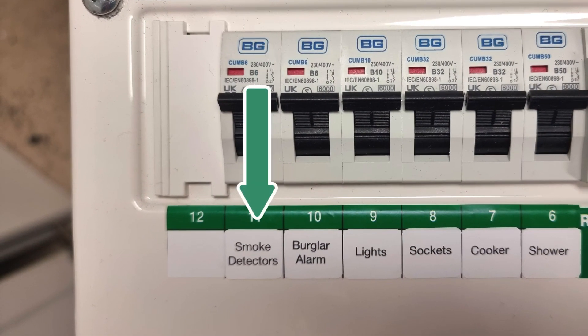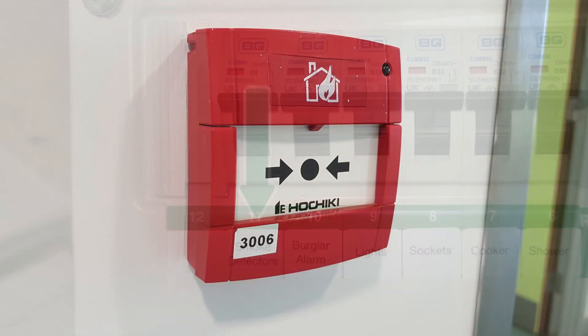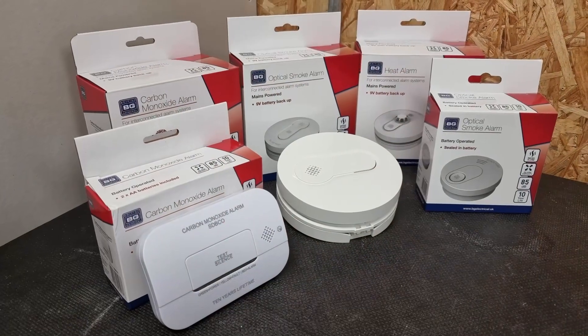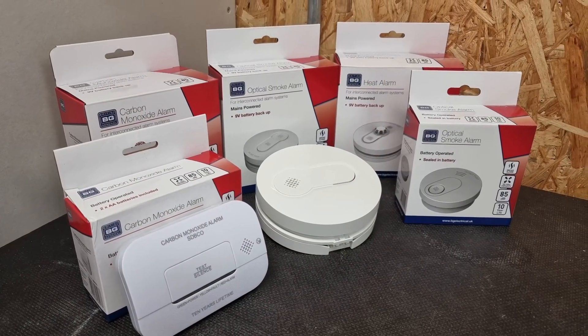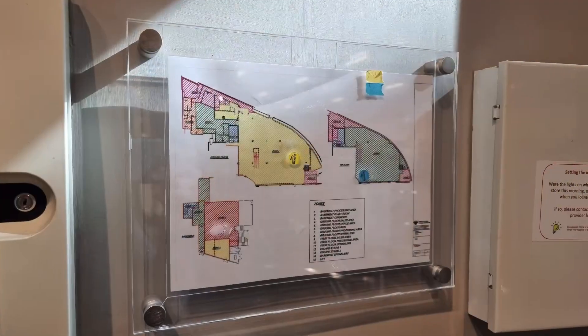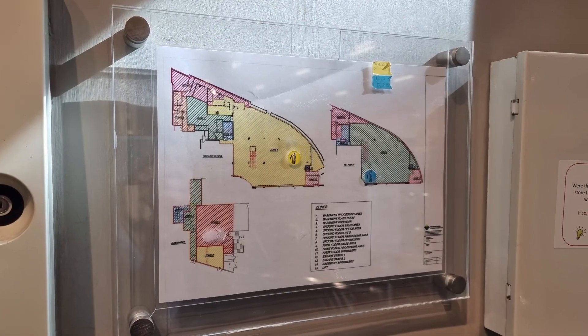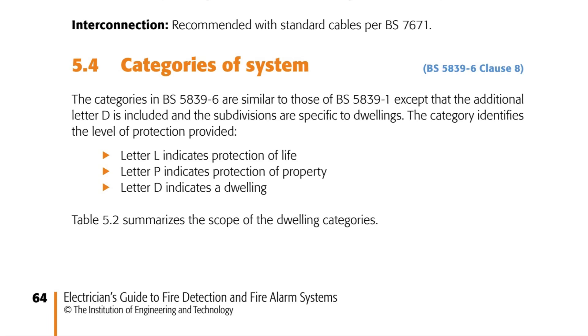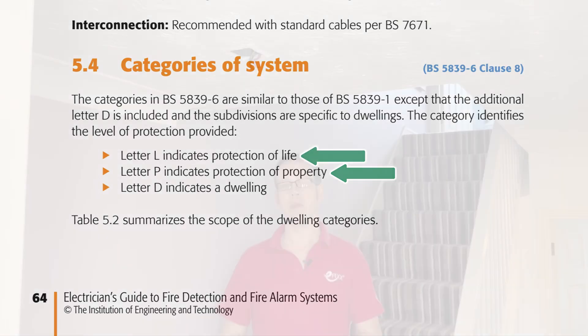Some fire detection systems would simply be overkill for domestic situations, and detection equipment designed for a domestic setting would not provide sufficient coverage and information when a fire broke out in a large complex building with lots of different rooms. The category of system, rather than referring to the type of equipment used, relates to whether the system is being used to protect the property or the lives of those using it. Within the life categories there are further divisions to explain the extent of coverage the systems provide.